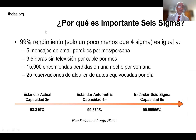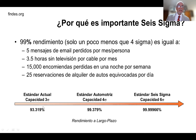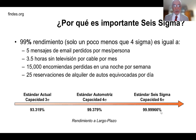¿Por qué es importante seis sigma? Un 99% de rendimiento, que es solo un poco menos que cuatro sigma, equivaldría a cinco mensajes de email perdidos por mes por persona, 3.5 horas sin televisión por cable por mes, 15,000 encomiendas perdidas en una noche por semana, y 25 reservaciones de alquiler de auto equivocadas por día. No debemos conformarnos con esa variabilidad. Llegar al estándar seis sigma implica alcanzar el 99.966% de rendimiento a largo plazo, que corresponde a 3.4 defectos por millón.